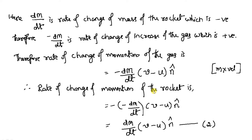As mentioned, rocket propulsion is based on the law of conservation of linear momentum. If this much momentum is changing in the downward direction, then an equivalent and opposite momentum change occurs in the upward direction, which is connected to the rocket. Therefore, we can write the rate of change of momentum of the rocket as the negative of the gas momentum: −[−(dm/dt)·(V − U)·N̂], which gives us (dm/dt)·(V − U)·N̂. Let us call this equation number two.